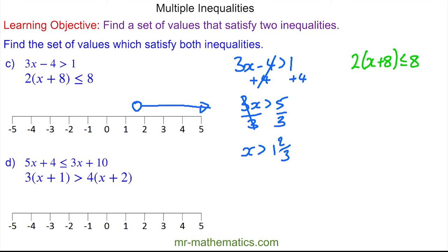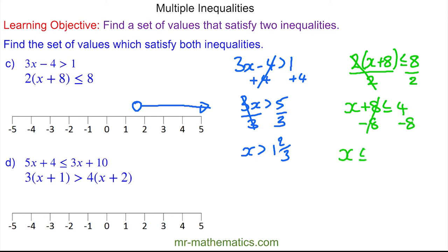For the next one we can divide both sides by 2 and these will cancel, so x plus 8 is less than or equal to 4. We'll take away 8 from both sides and these will cancel, so x is less than or equal to negative 4. Here we have a full circle at negative 4.